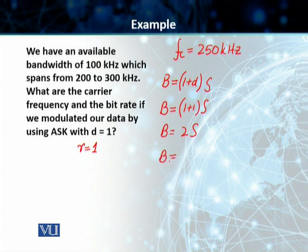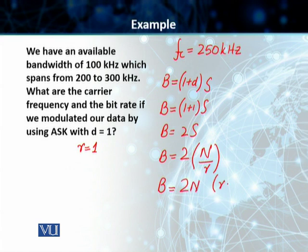Let's insert the value of the signal rate, which is N over R. Bandwidth is equal to 2N, and the reason for that is because our R is equal to 1.